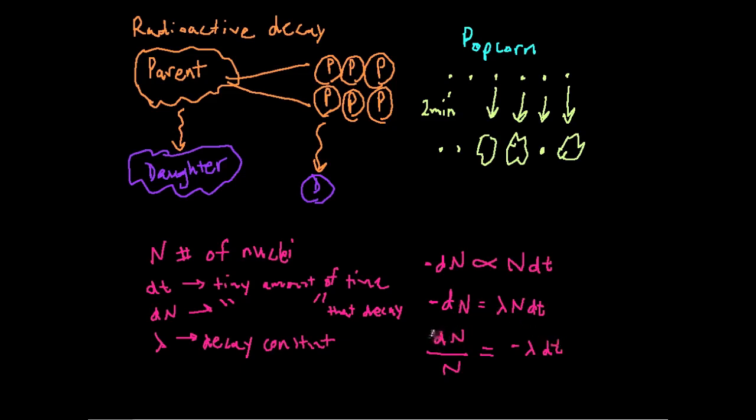And I can integrate both sides as well, so I can do the integral here. And then since this negative lambda, lambda is a constant, so I don't need it inside the integral. I'm going to do it like so.